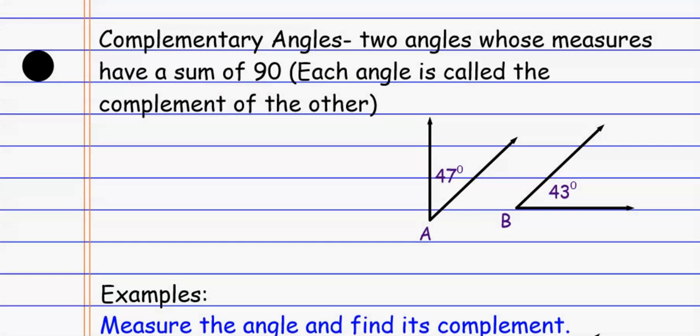All right, so complementary angles. Complementary angles are just simply angles that add up to 90 degrees. When I take the two measurements and add them up, it equals 90 degrees.